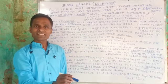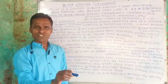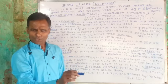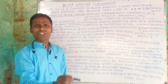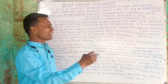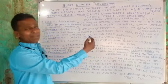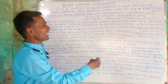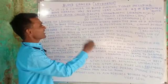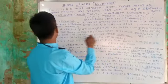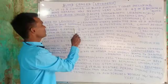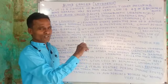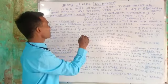Mutation is a sudden change in genes due to a change in the number or position of chromosomes. A mutation causes cells to grow abnormally and they cannot develop and function normally — and this leads to blood cancer.